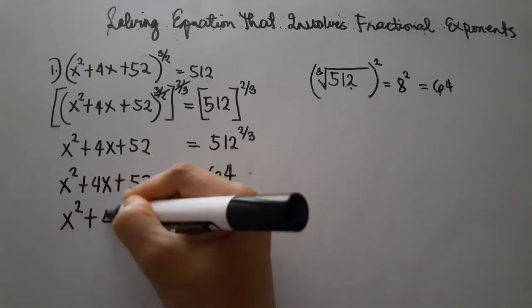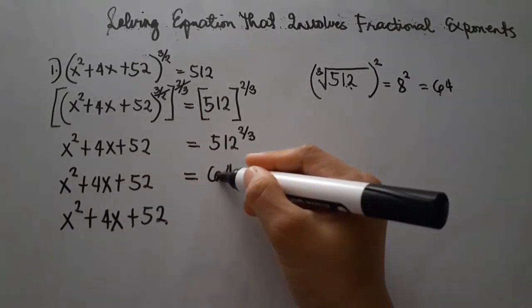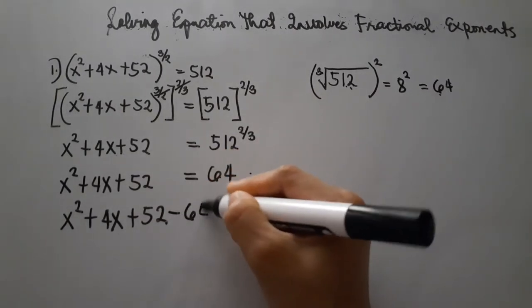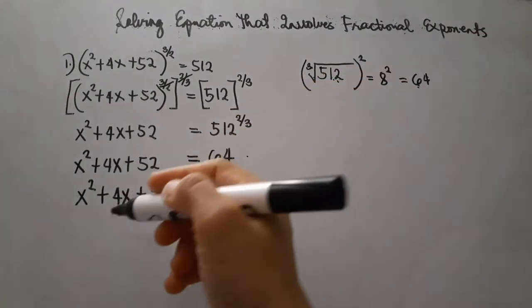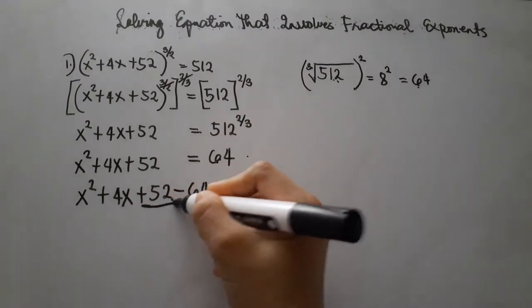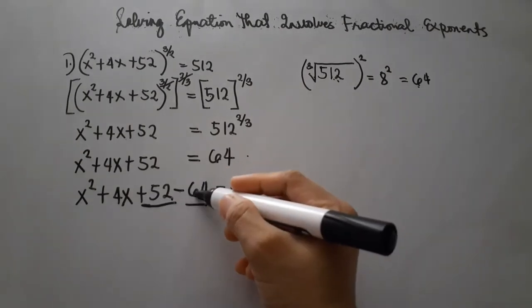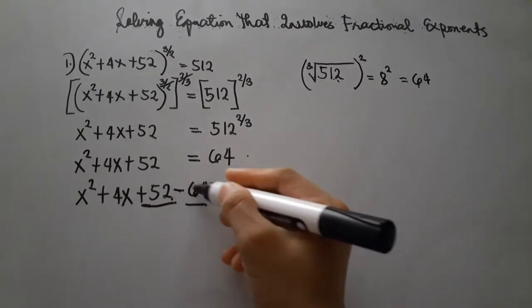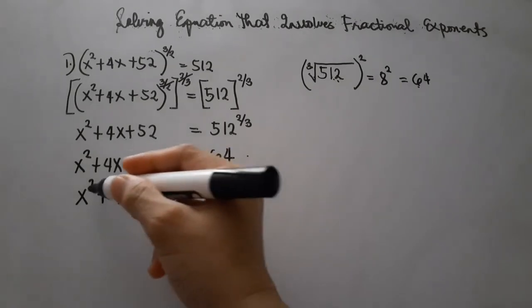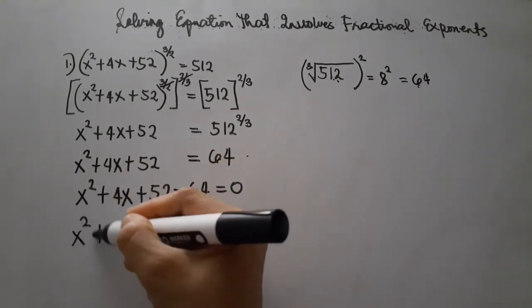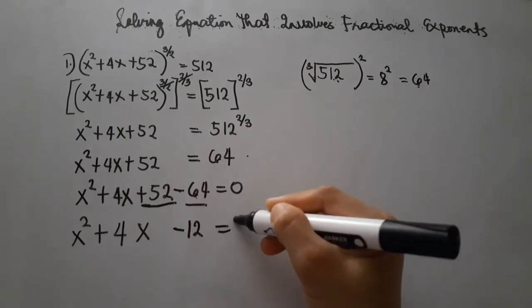We subtract 64 from both sides. Since positive 52 is less than 64, we subtract and use a negative sign. 64 minus 52 is negative 12. So we have x squared plus 4x minus 12 equals 0.